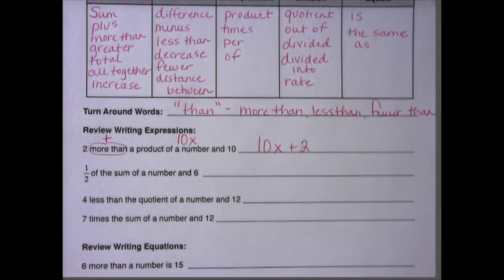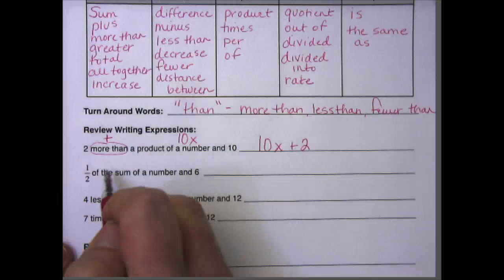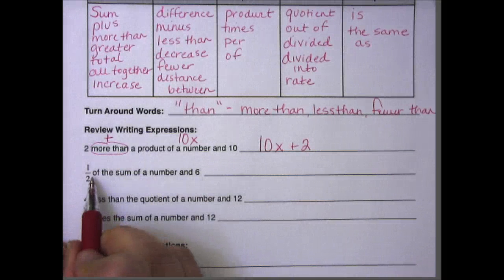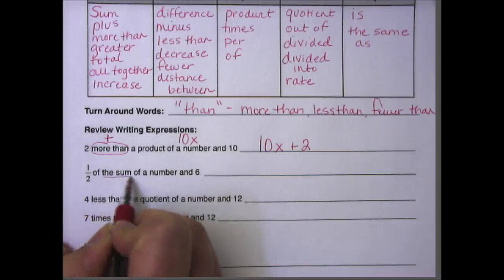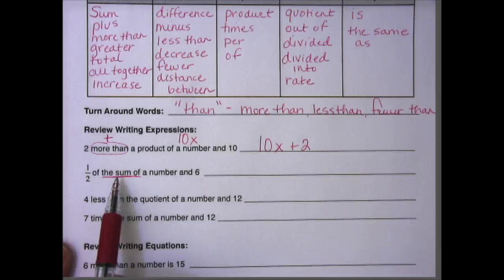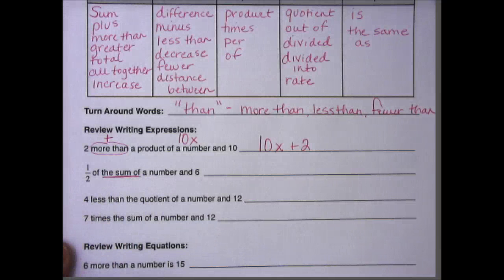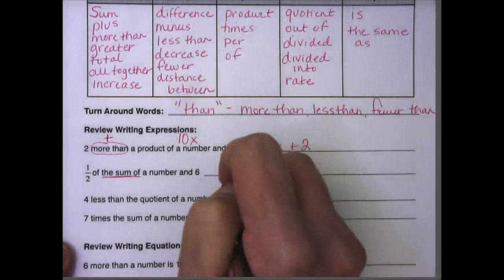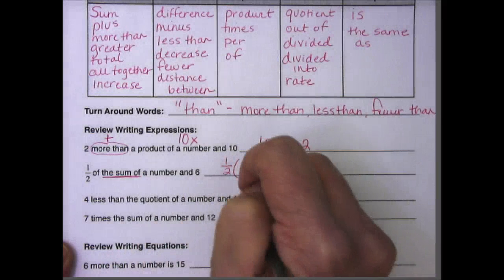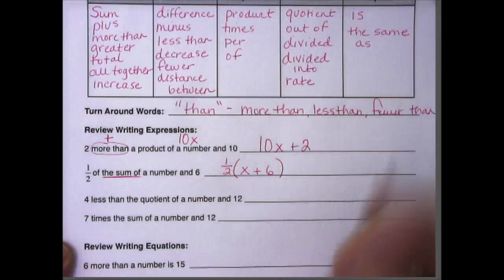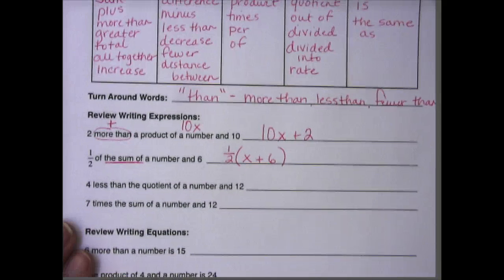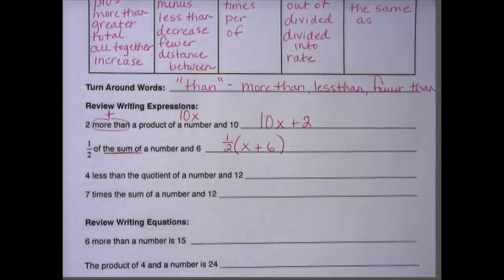Let's look at the next one. One half of the sum of a number and six. So this is something that we're going to really start talking about. When you see the sum of, first of all, we know that it means add. We also know that this is going to give us some parentheses here. So we have one half outside here, the sum of a number, which we don't know what it is, and six. And if you remember, that kind of looks like our distributive property from the beginning of the year, which we will also be reviewing soon.